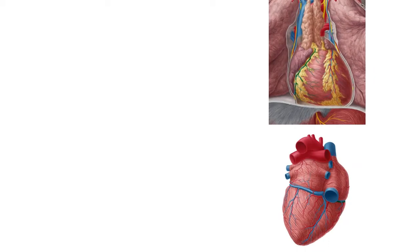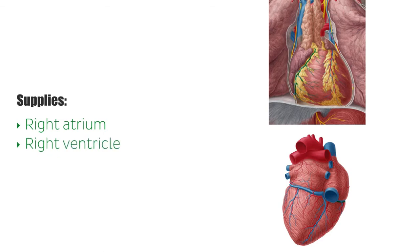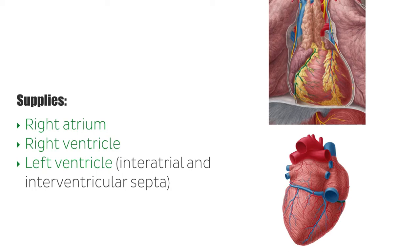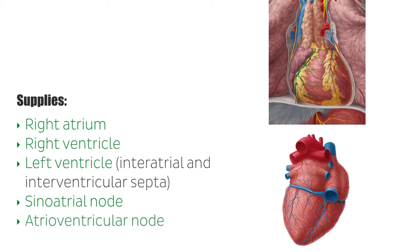It routes to the right side and continues on to the posterior surface of the heart. It supplies the right atrium, the majority of the right ventricle, the portion of the left ventricle that communicates with the diaphragm, areas of the interatrial and interventricular septa, the sinoatrial node in around 60% of the population, and the atrioventricular node in general.